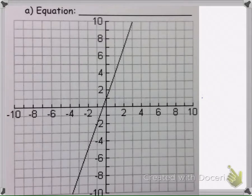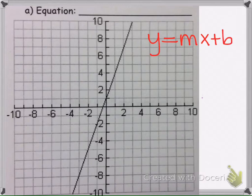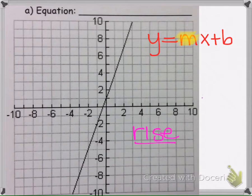We are asked to write an equation for the line. I'm going to use slope-intercept form, which is y equals mx plus b. I'm going to find our m value, which is the slope — the number in front of the x. To find that, I'm going to find the ratio of the rise to the run.